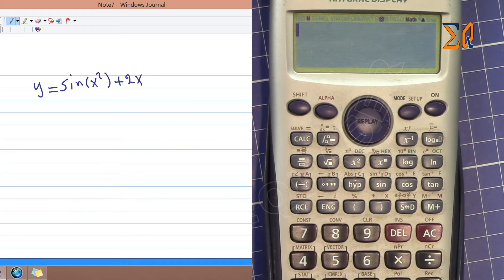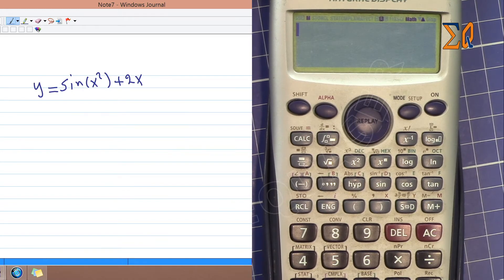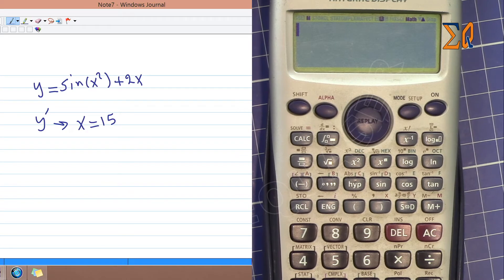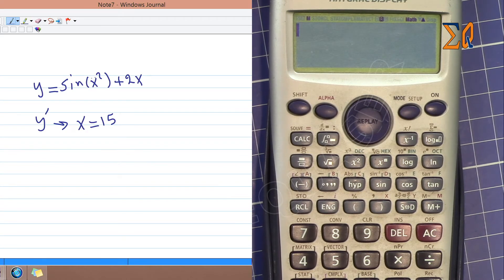Now let's say we have this equation: y = sin(x²) + 2x. You're asked to find the derivative y' and evaluate it at x = 15. You take the derivative, which will be another equation, then plug in 15 for x. The answer will be a number.